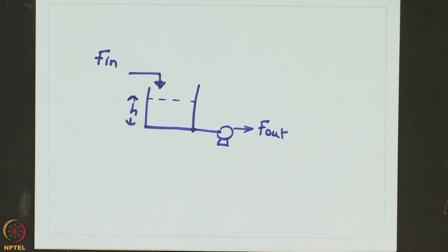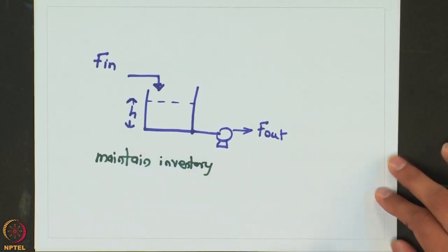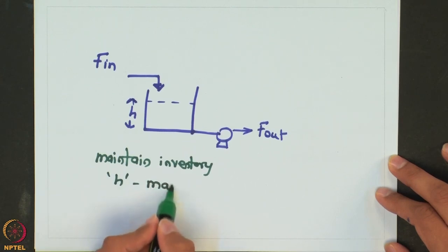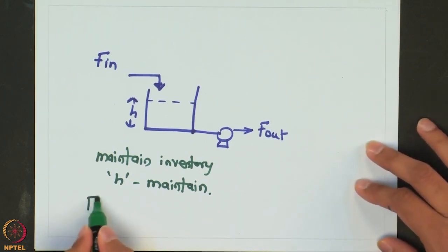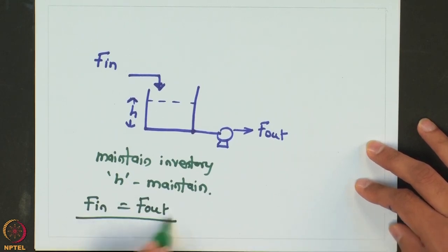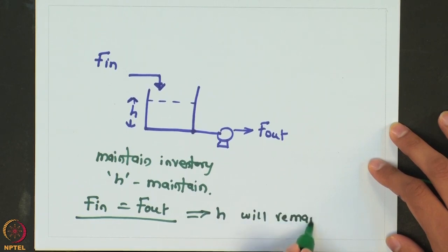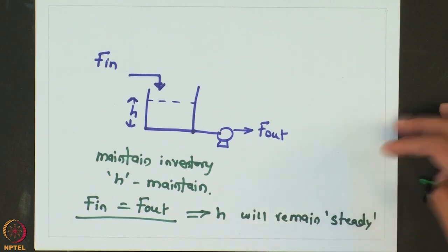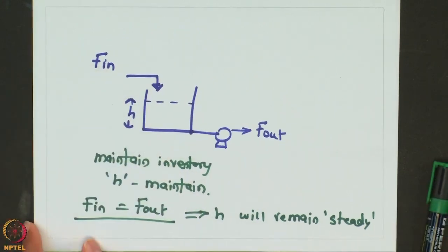When you have such a tank, the objective is typically to maintain a certain inventory inside the tank, which means you have to maintain the height inside the tank. From your basic material balance, you know that as long as F_in equals F_out, your height will be maintained — which we also call steady state. For such a system, there is no control over what comes in; there is no way you can manipulate F_in.